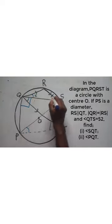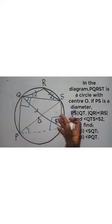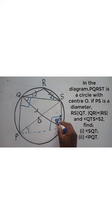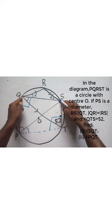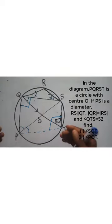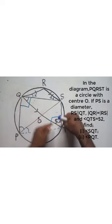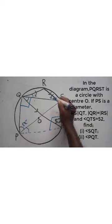If I call each base angle of the isosceles triangle X, then both angles are X. Another circle theorem says that angles subtended by the same chord in the same segment on the circumference are equal. So the 52-degree angle and the angle formed by the same chord in the same segment are equal. These are the key facts I have been given to work with.